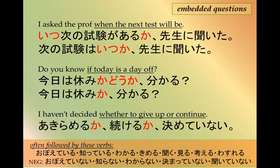There are certain verbs that commonly go with embedded questions: 覚えてる (to remember), 知ってる (to know), わかる (to know/understand), 決める (to decide), 聞く (to hear), 見る (to see), 考える (to think about), 忘れる (to forget). Also their negatives: 覚えてない、知らない、わからない、決まっていない、聞いていない.